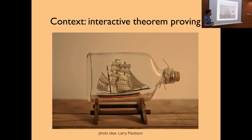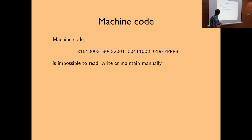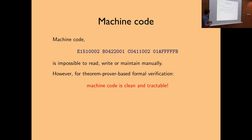Larry Paulson likes to use this kind of picture — because you have to fit everything through this little kernel, it feels like building one of these ships in a bottle, because it's rather difficult. The topic was machine code, and I had to deal with this kind of thing — this is the GCD program, very beautiful in ARM assembly, only four instructions. But it's very clear that this is not readable, writable, or maintainable for humans. However, I found out that for theorem-proving-based formal verification, machine code is clean and tractable.